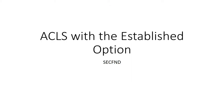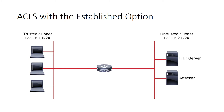When using access control lists (ACL), it is always important to understand the flow of traffic that you are trying to control. It is important to understand if the traffic is originating from a trusted network and going to an untrusted network, or vice versa.